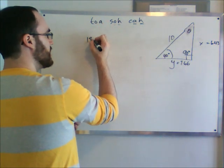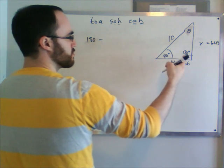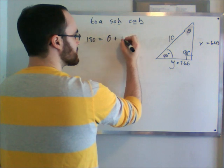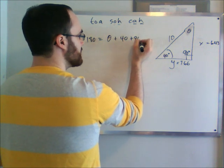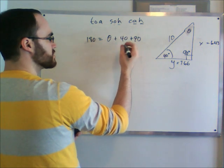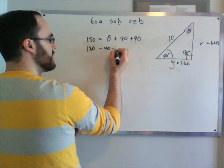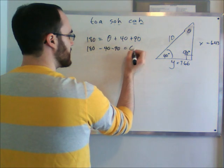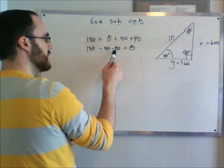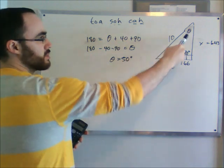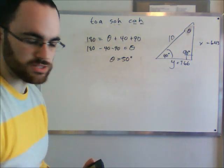So 180 equals all the angles together. So theta plus 40 plus 90 degrees. So if I bring these over, I'm going to have 180 minus 40 minus 90 equals theta. So 180 minus 90 is 90 left, minus 40 is 50. So theta equals 50 degrees. We can solve for it that way.